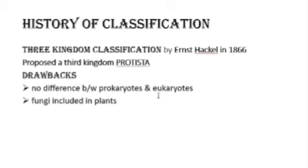However, the three kingdom system also had drawbacks. There was still no difference between prokaryotes and eukaryotes. Additionally, fungi were still included with plants, even though fungi have chitin in their cell wall, not cellulose like plant cell walls.